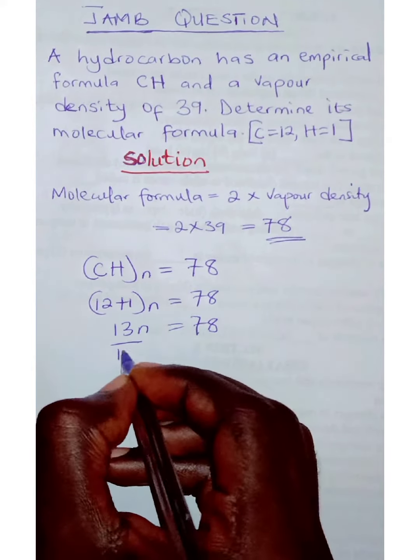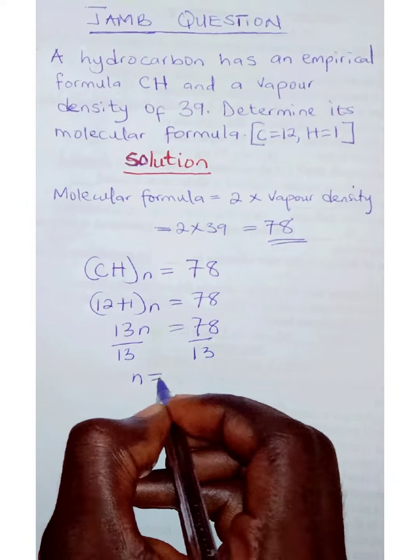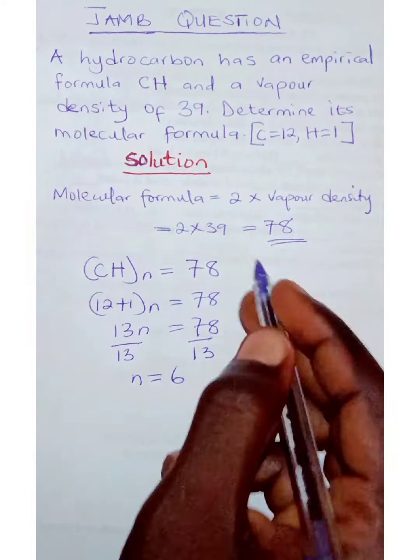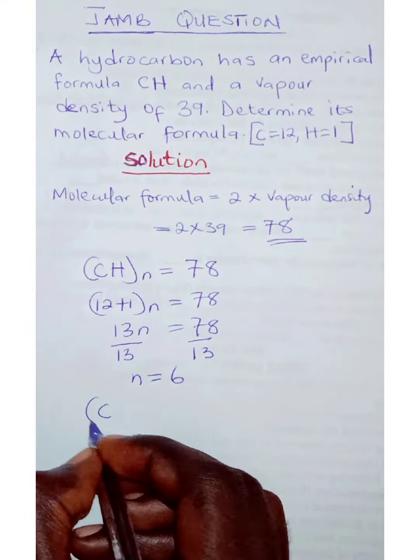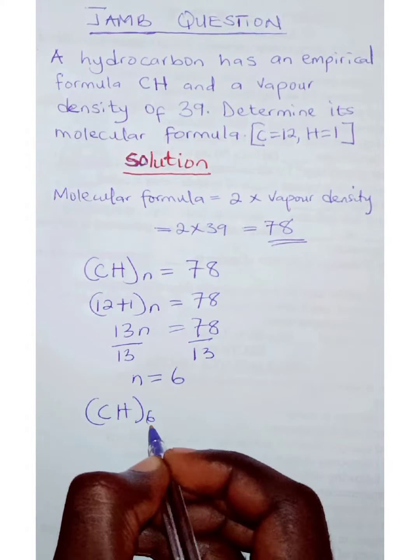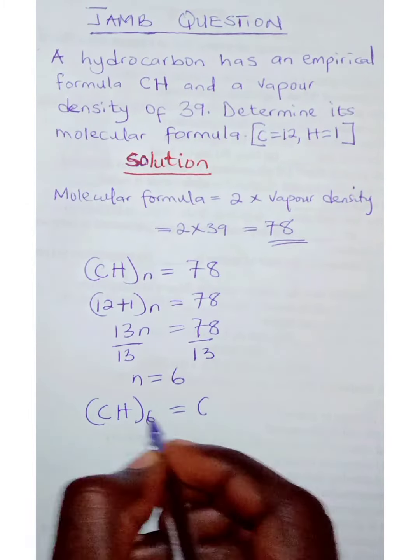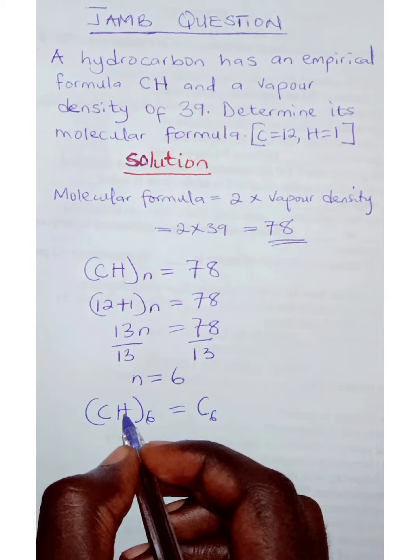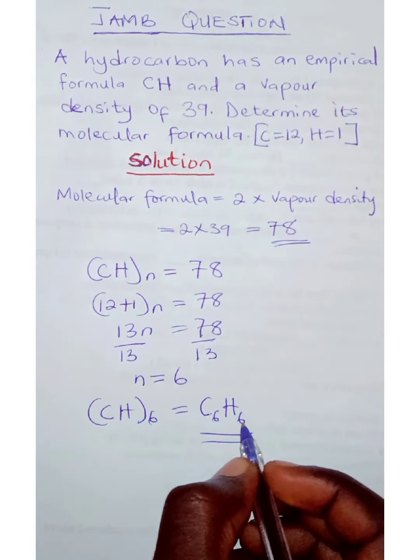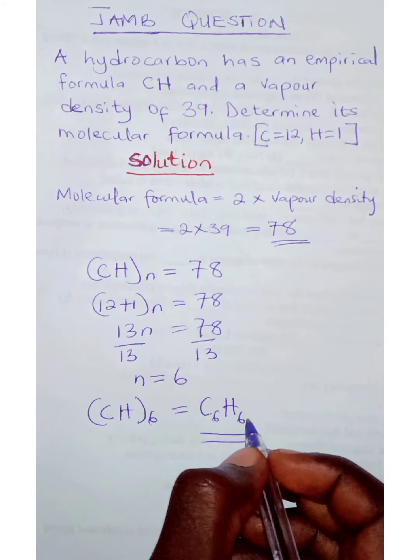Then you divide both sides by 13, and n is equal to 6. Then you come back to this equation and put your 6, which is C times 6 and H times 6, to give you C6H6. So this is the molecular formula of the compound.